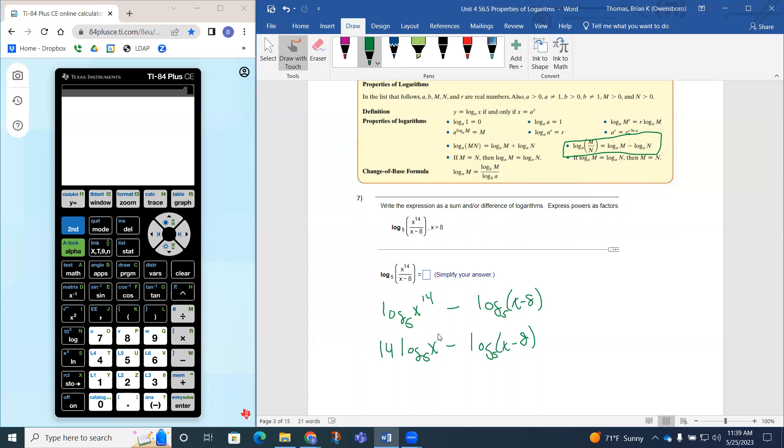So this would be what we'll be going in our little box here, would be this answer here. So 14 times the log of x base 5 minus the log of x minus 8 base 5.